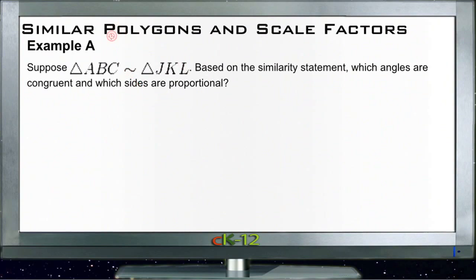Let's take a look at the example questions for similar polygons and scale factors. Our first example A says: suppose triangle ABC is similar to triangle JKL. Based on the similarity statement, which angles are congruent and which sides are proportional? So we have two triangles.